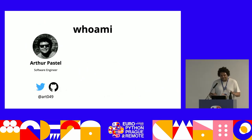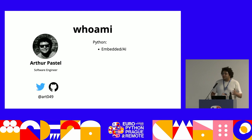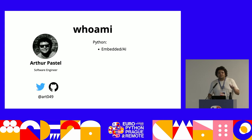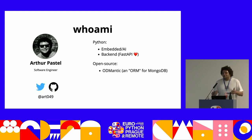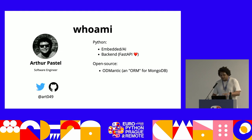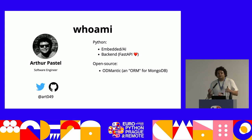First things first, I'm Arthur, I'm from Paris — you probably noticed with my accent. You can find me on Twitter and GitHub at art049. I started working in Python approximately eight years ago, starting in embedded systems and building AI tools for robotic applications. Then I started doing backend development and discovered FastAPI, which got me into open source. I built Odimantic, a simple ODM for MongoDB based on PyDantic — we'll come back to PyDantic later because they used Rust in production about a month ago.